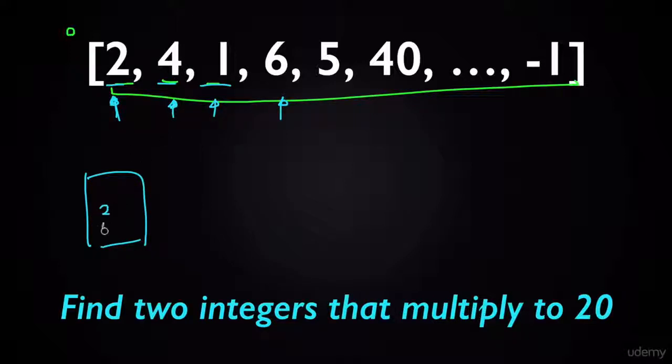So when we see 2, write down 2 right here. And when we see 4, write down 4 and so on. And whenever we see a new number, for example 5 right here, I would ask myself, what's the number that would multiply to 20 with 5? The answer is of course 4.